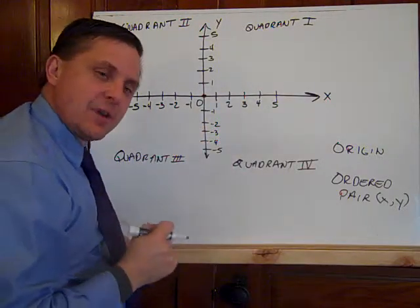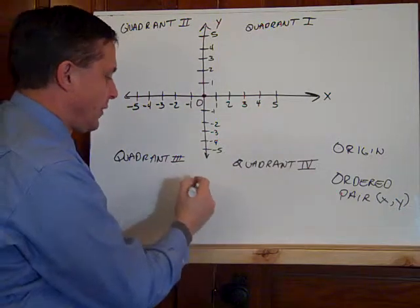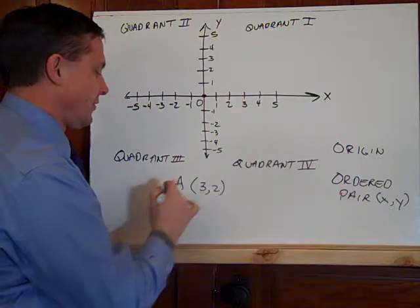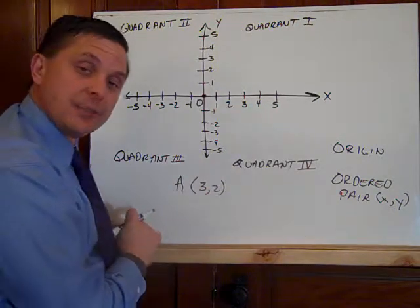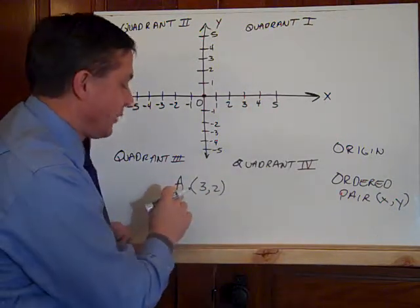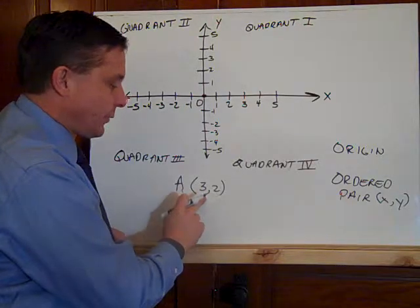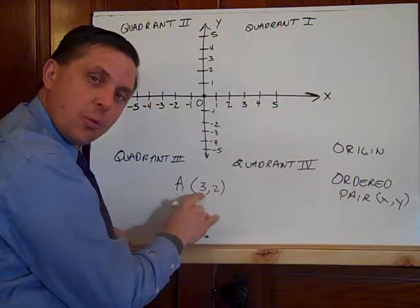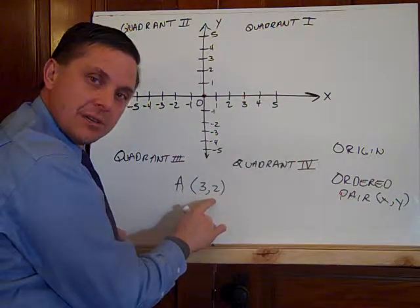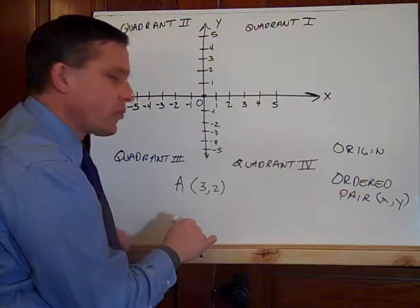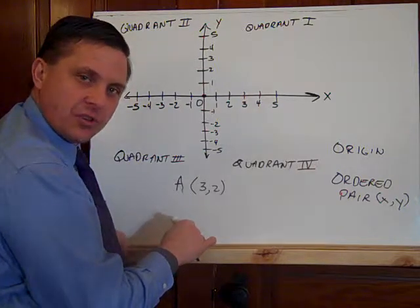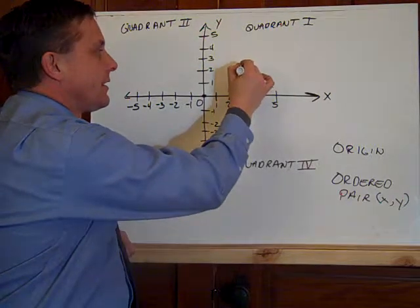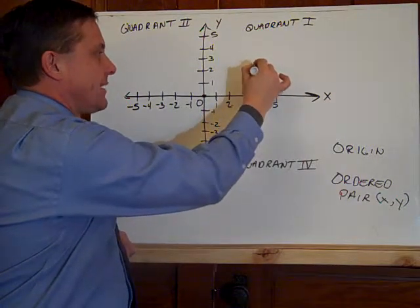Now, any time we have a point. So if I want to say a point, three comma two. And we'll use capital letters to identify points. Lines, we'll use little letters later on, but capital letters. So I want to do point three, two. And again, an ordered pair is always x comma y. When x is equal to three, y has to be two. And I like to use run and rise versus run and jump. I use run and rise. So I run to three and I rise to two. That is point A.